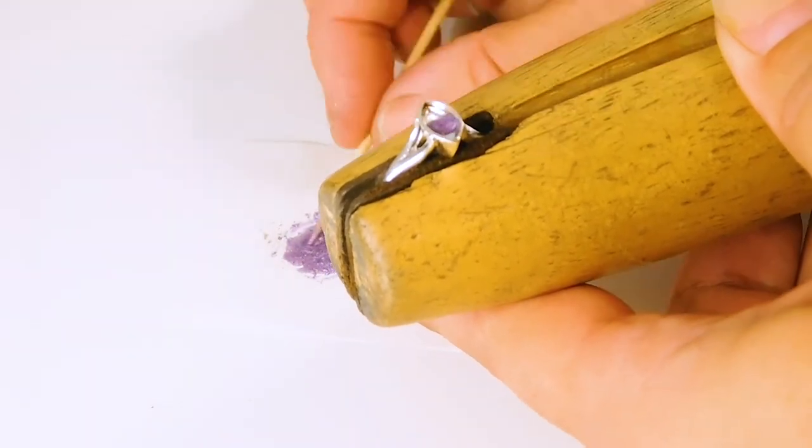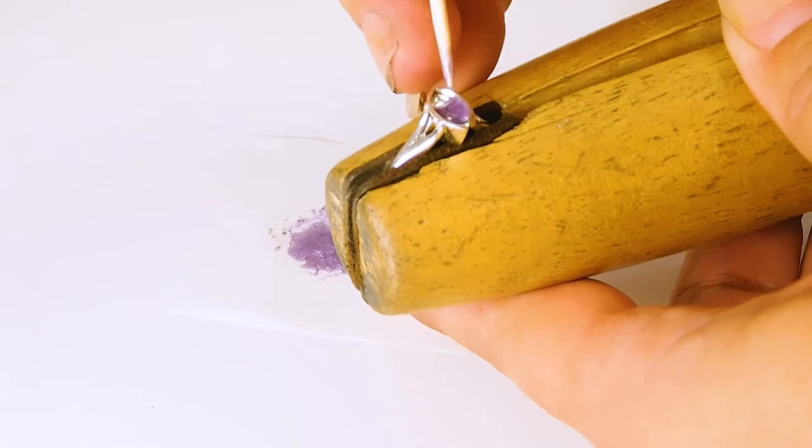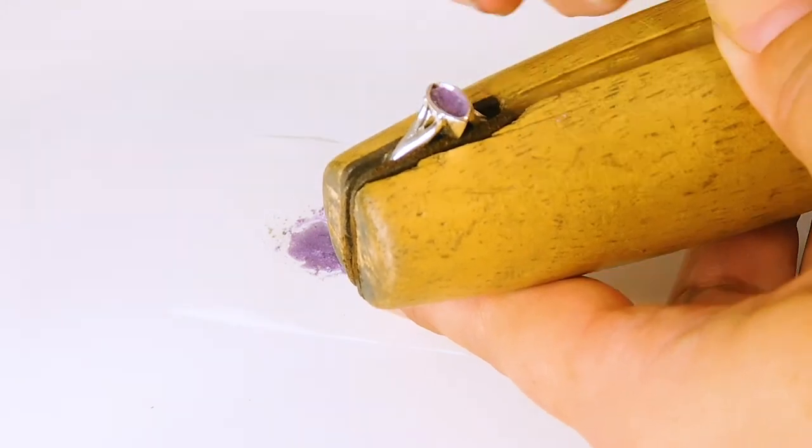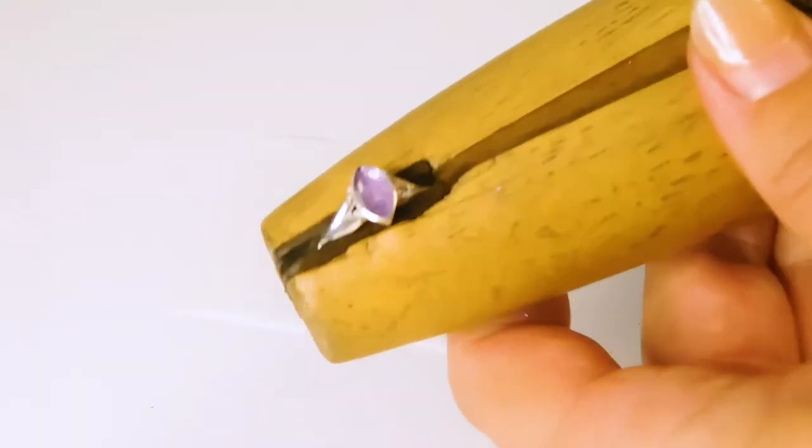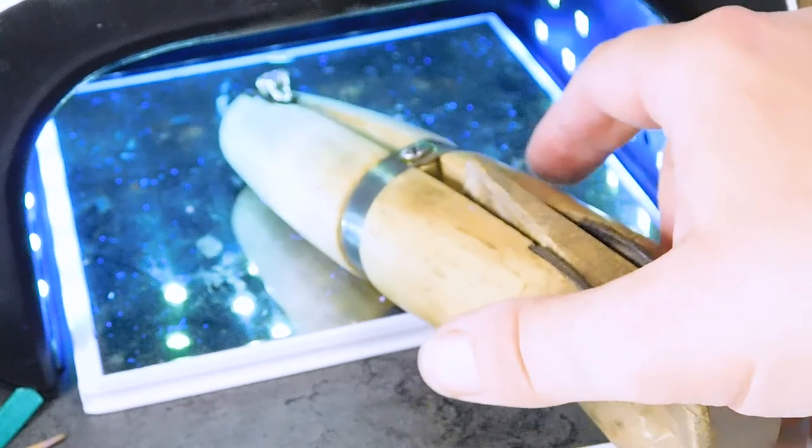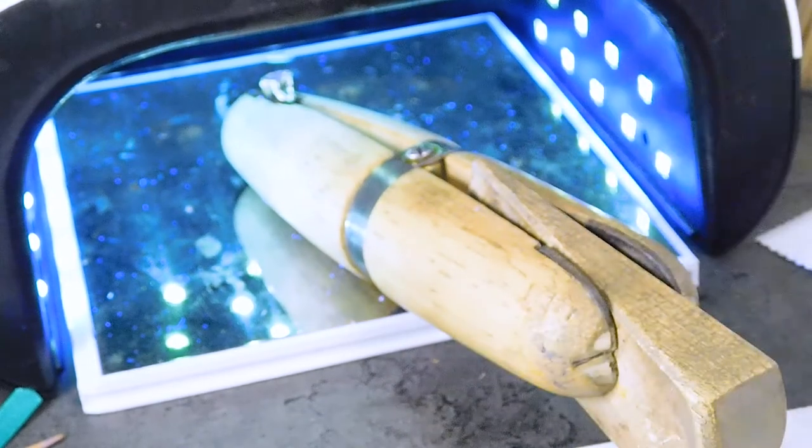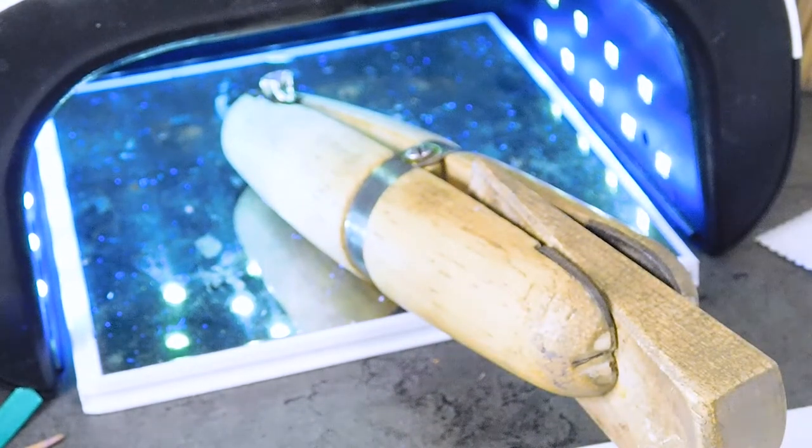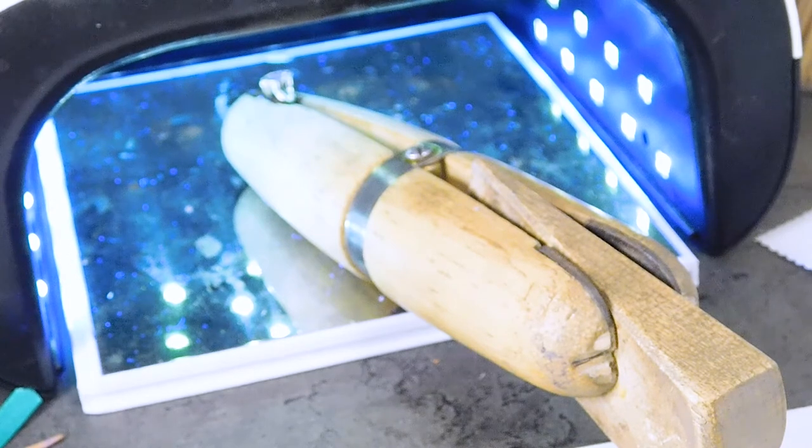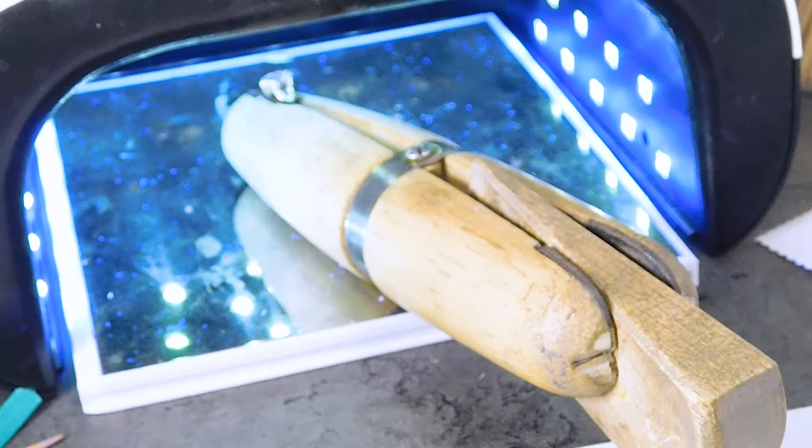If you're working in epoxy resin, you might want to do the first layer in color, then add the ashes to the second layer on top. Otherwise the ashes could sink and you won't see them. Cure the ring in the UV lamp for 60 seconds. Because the piece is so small, there's no risk of it overheating, so you don't have to use a low heat setting.